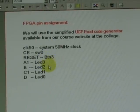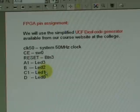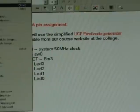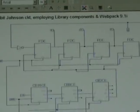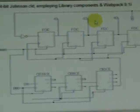We will assign the four LEDs, LED3, LED2, LED1, LED0, to the output of the final circuit that we will show later on in real time. It looks somewhat like this for the 4-bit Johnson circuit employing library components and using the Webpack 9.2.